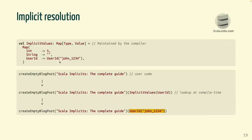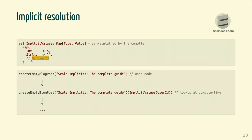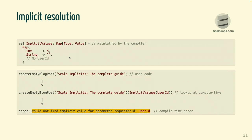What happens if there is no UserID in this map? When the compiler does a lookup and there is no value it can find to inject into your function, we get a compile-time error: 'could not find implicit value for parameter requester ID of type user ID.' This is a compile-time error saying essentially: I don't know which value to inject.